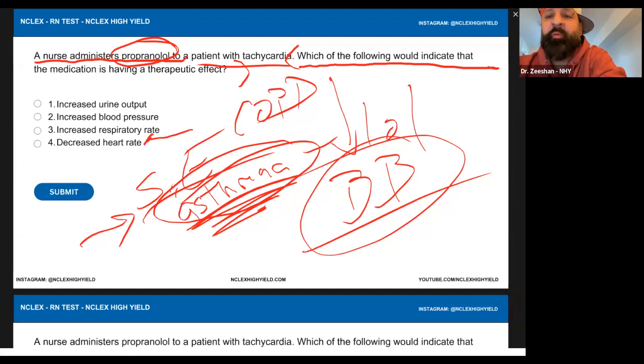All right. We start with number four, decreased heart rate or increased respiratory rate. Between the two, we're using the method, which are we keeping? Good. Four over three. Increased blood pressure or decreased heart rate. We're seeing if this medication is working. Good.